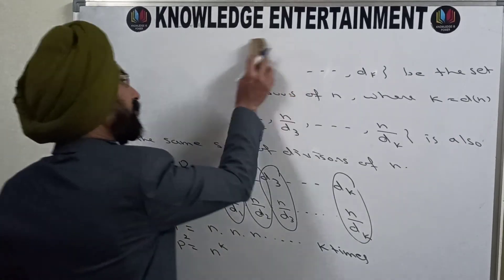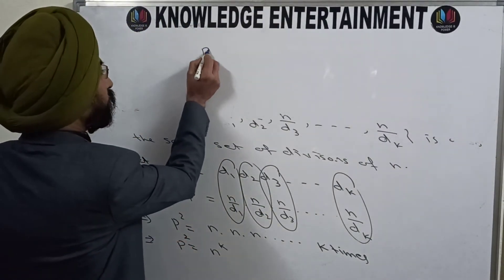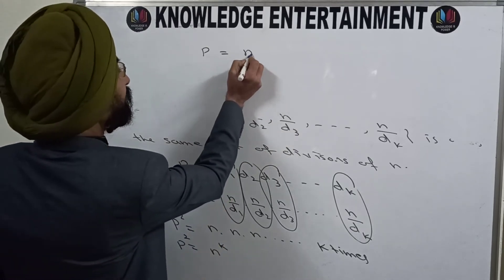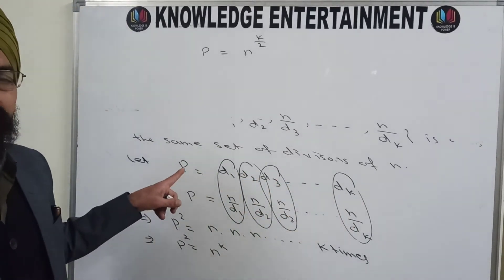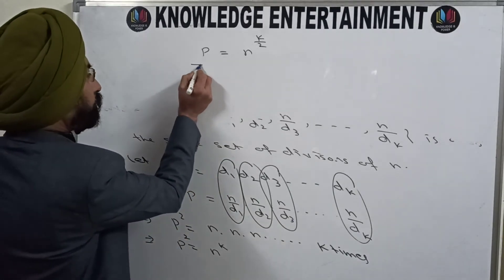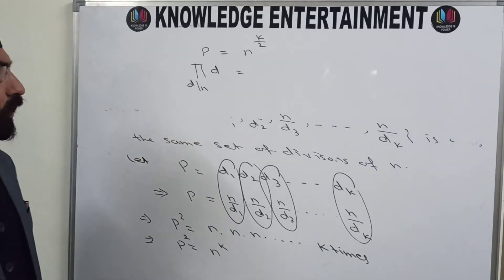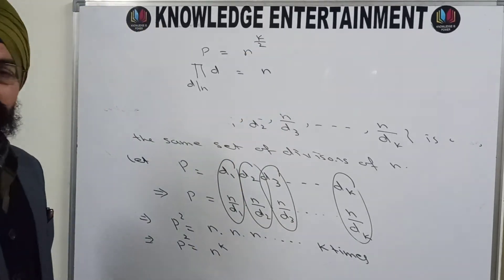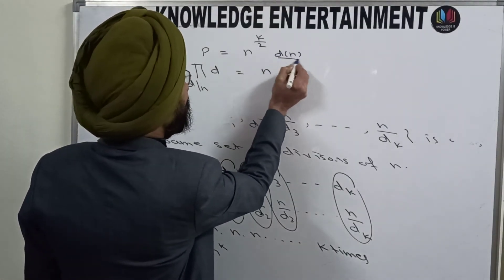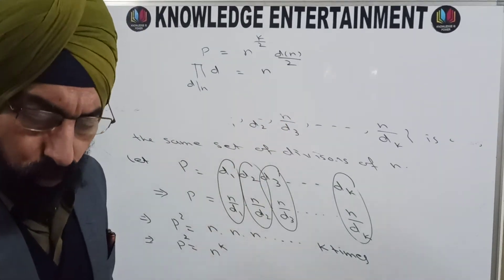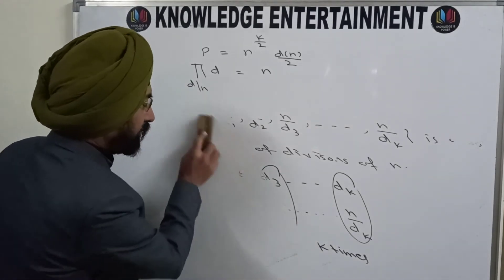Taking the square root of both sides, P = n^(k/2). Since P is the product of all divisors of n, we can write: ∏_{d|n} d = n^(d(n)/2), where k = d(n). This completes the proof of this important result.